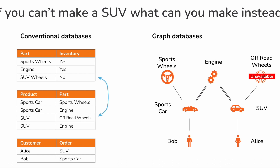First you'd have to join the parts that are unavailable to the products they go into, to find the products you can no longer make. Then you'd have to join the parts relating to those products back to the inventory to see what parts you have available. Then join the inventory back to the product to see which cars those inventory parts can still build. Then join back to the inventory again to see what parts you still need to get in order to build the car. You then have a set of cars you could build and a set of parts you still need. Then if you join this to the customer table, you can filter out only the cars you can sell, and finally choose which car you're going to make. Now that is a lot of joins.